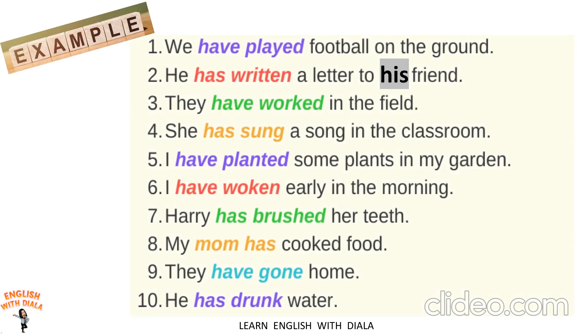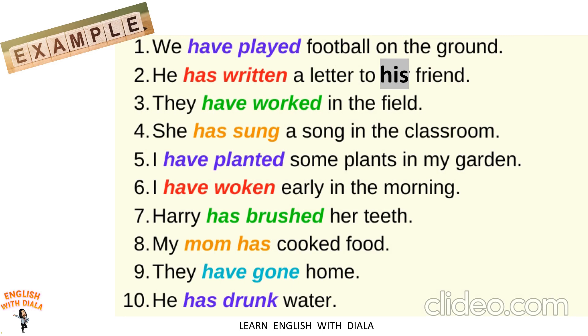I'm going to show you now some examples on how to use the present perfect tense. For example, we can say: 'We have played football on the ground.' 'We' is the subject — since it is plural, we add 'have'. 'Played' is the past participle form of the verb.